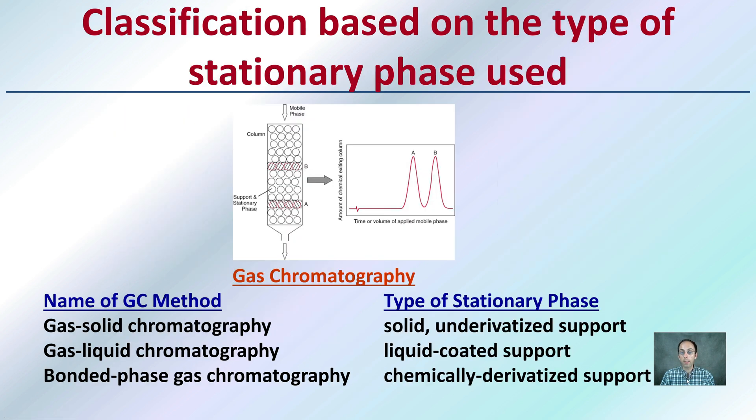Classification based on the stationary phase used—well, the gas chromatography methods could be gas-solid chromatography, gas-liquid chromatography, bonded-phase. Types of stationary phase that could be used include solid, liquid-coated support. There are different types that can be used, and they'll be specific for the materials you're trying to study.